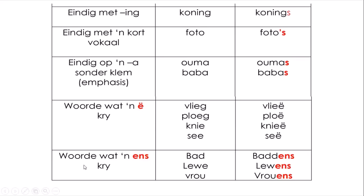Woorde wat anders skryf: 'bad' - it's a short vowel so we double it up - word 'baddens'. Lewe word lewens. Vrou word vroue.